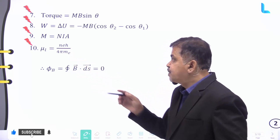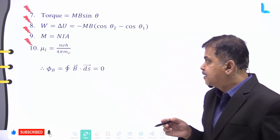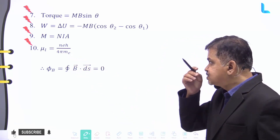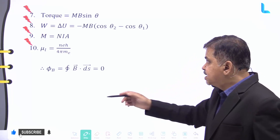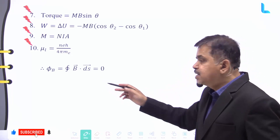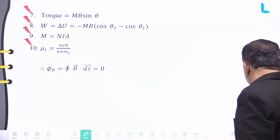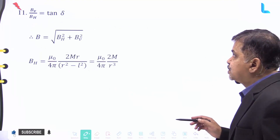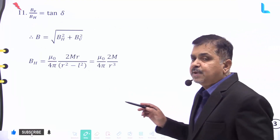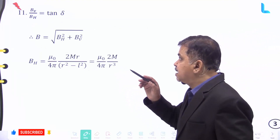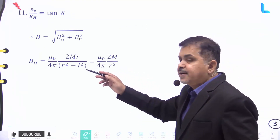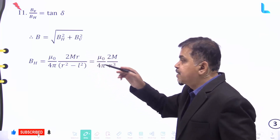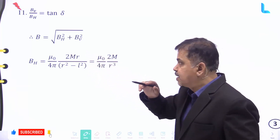The orbital magnetic moment mu_l is given by n into e h divided by 4 pi m_e. The magnetic flux phi B is given by B dot dS, and that is equal to zero. B_v divided by B_h equals tan delta, and B is equal to square root of B_h square plus B_v square.